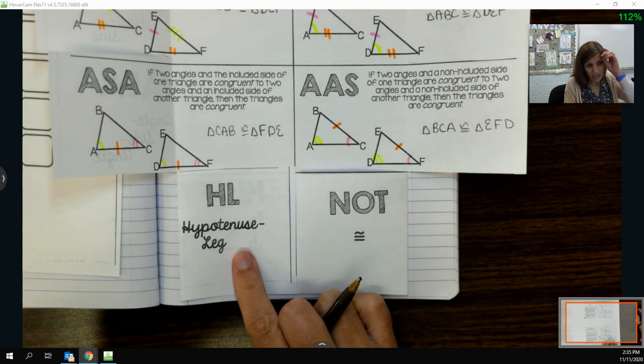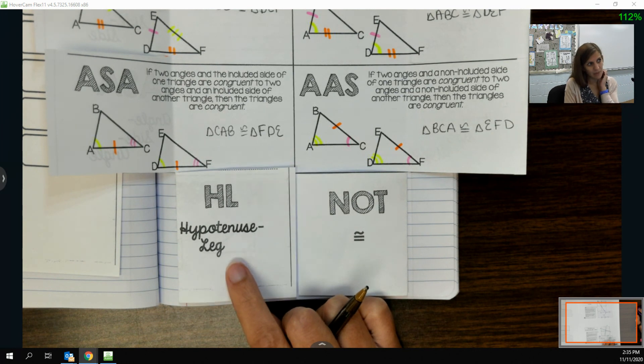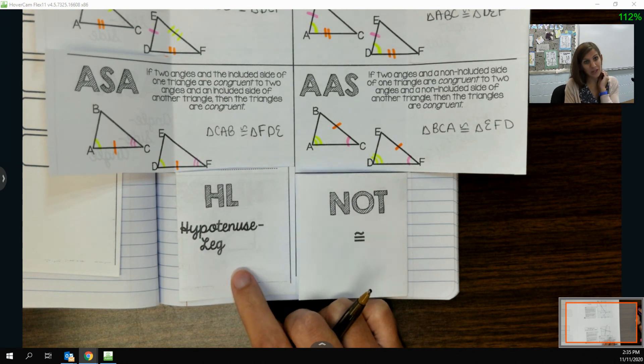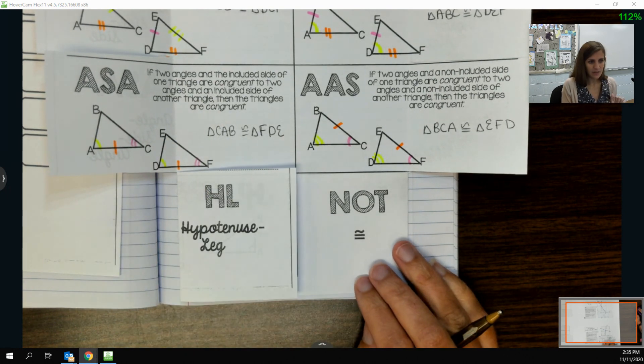This one here, we're going to come back to later. This is another shortcut, but we're going to look at this more once we get towards the end of the chapter. It'll be a good review for us to come back to this stuff. So we're going to skip this square for now.